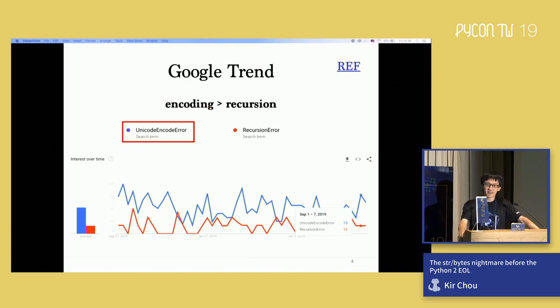If you check the Google trend, you will see an interesting result. Unicode encoded error is more than recursion error. This means people who learn Python for algorithms is probably less than people who meet this encode error. That's basically the fact we know now.